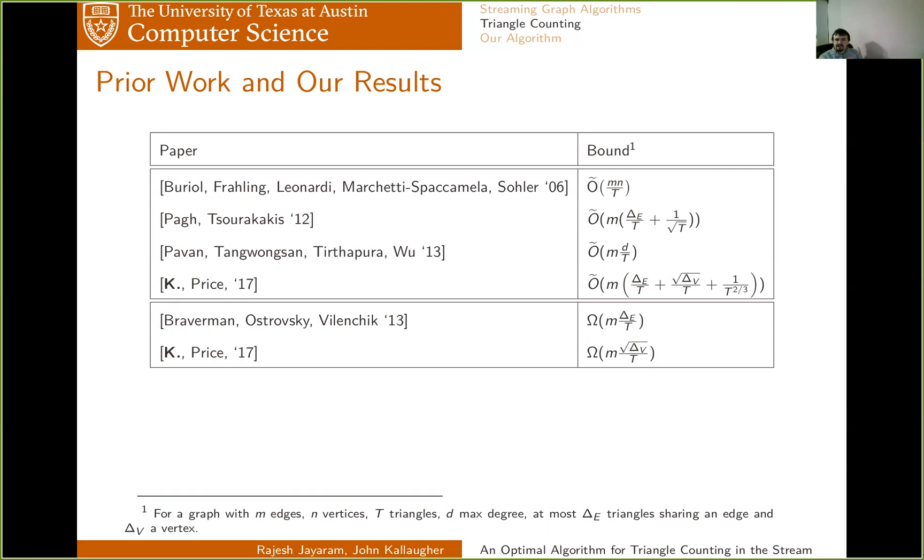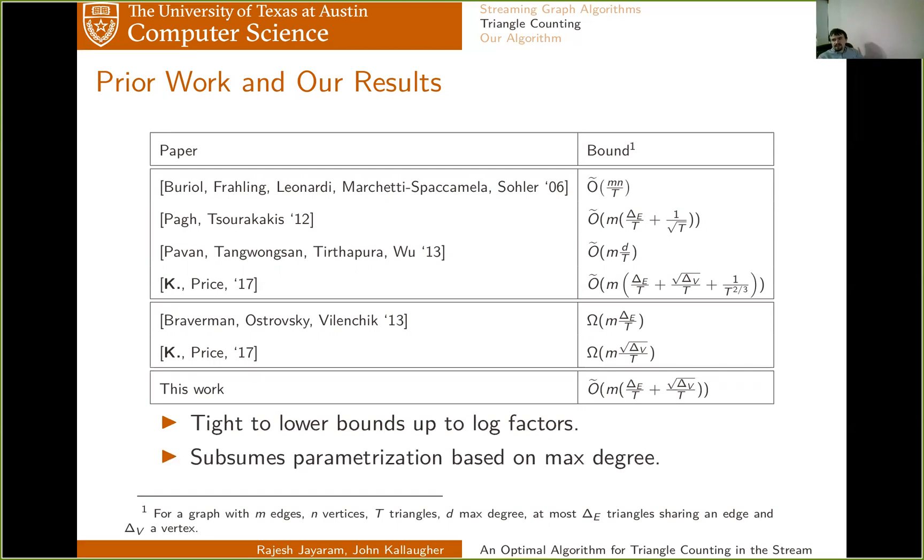So this is the pre-existing work, and the algorithm that we present for this problem is a new algorithm that gets M delta E over T plus square root delta V over T. In other words, it is tight to those lower bounds up to a log factor. Moreover, it also assumes that alternative parameterization I mentioned by the maximum degree of the graph, because delta E can be at most D choose two, and delta V can be at most D choose two.